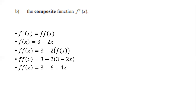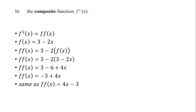Now we simplify to give the answer in its simplest form. We have 3 minus 6 which gives negative 3, plus 4x. Rewriting with the x term first: f²(x) = 4x minus 3. That is our answer for the composite function f(f(x)).